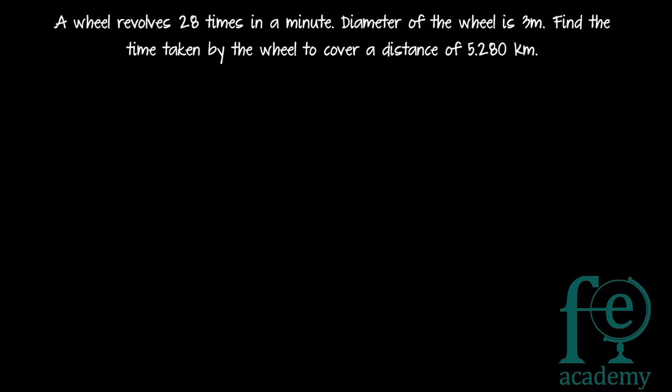The last question: a wheel revolves 28 times per minute and the diameter of the wheel is 3 meters. Find the time taken by the wheel to cover a distance of 5.28 kilometers. Given: 28 revolutions per minute, diameter = 3 meters; find the time to cover 5.28 kilometers.